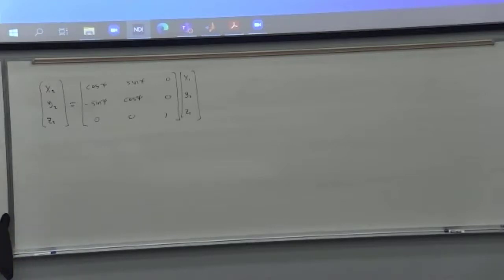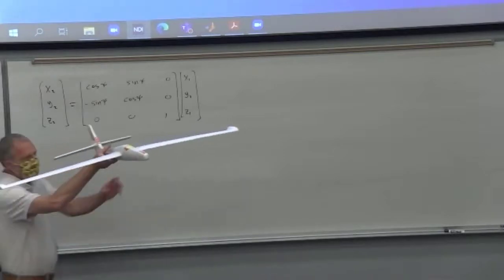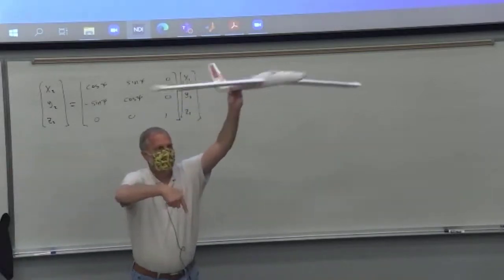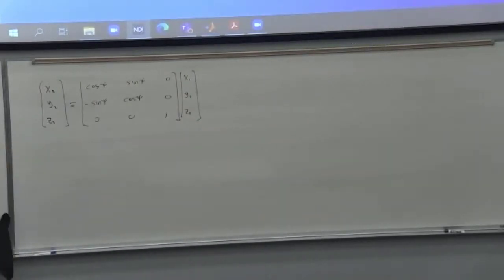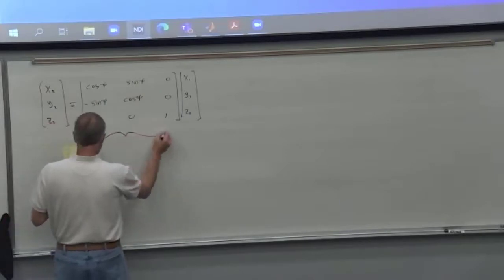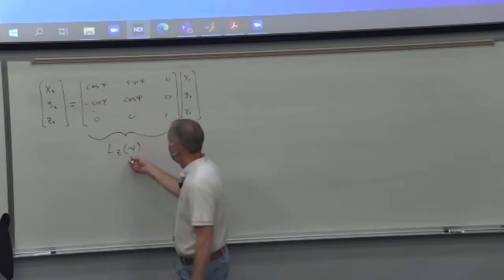Here's our airplane, gravity, and the x1 coordinate system is here. We need to know which way it acts in the two coordinate system after the transformation. The book calls this matrix, this transformation matrix, L_z(psi). It's the rotation about z through an angle psi.